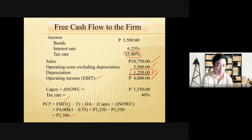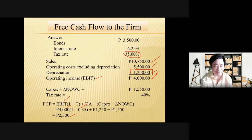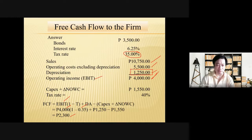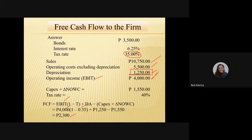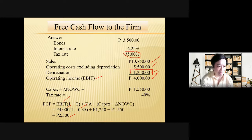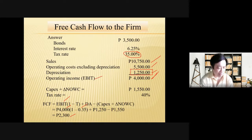The 2,300 free cash flow means that amount can be used to pay obligations, make additional capital expenditures, or pay dividends without affecting operations. That is the importance — it does not affect your operations. That is why it is called free cash flow.